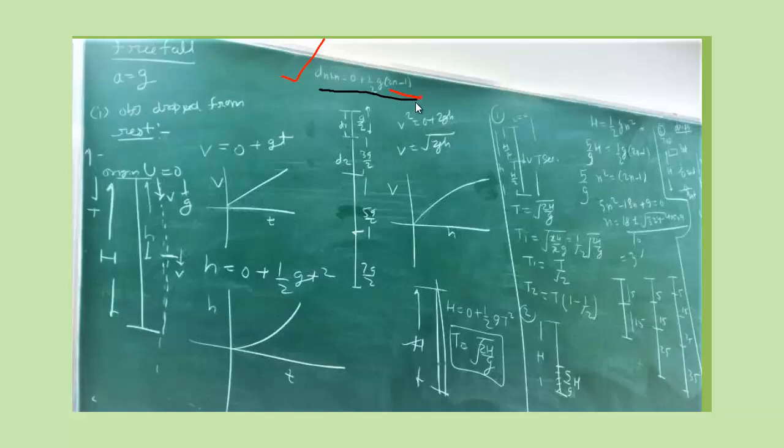If we have n equals 1, then 2n minus 1 is an odd number. The odd numbers are 1, 3, 5, 7, 9, 11, 13. This is half g. We will have multiplication of half g. If n is 1, 2 minus 1 is 1. If n is 2, 2 into 2, 4 minus 1 is 3. n equals 3, 3 into 2 is 6 minus 1 is 5.